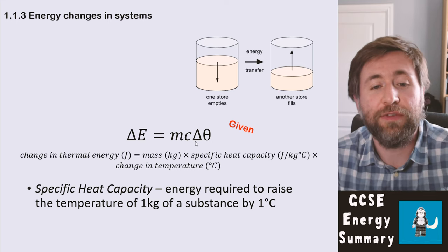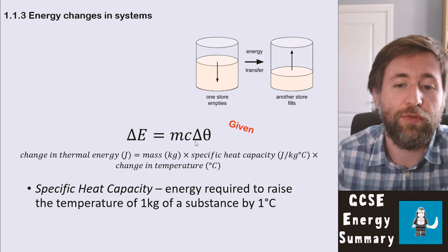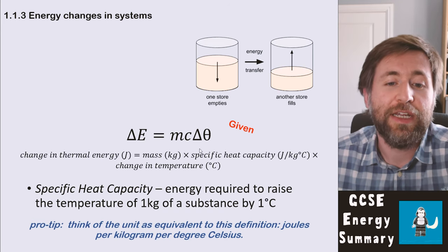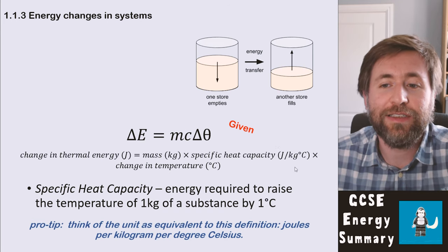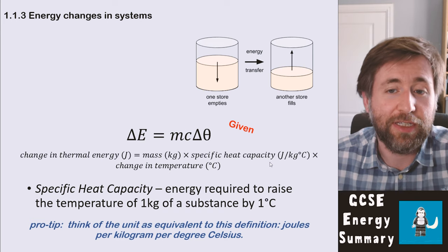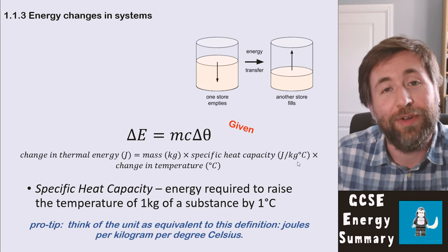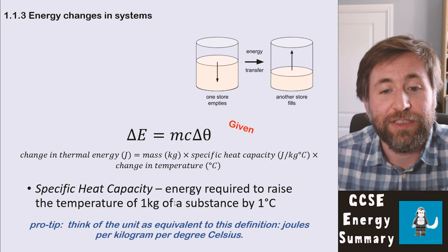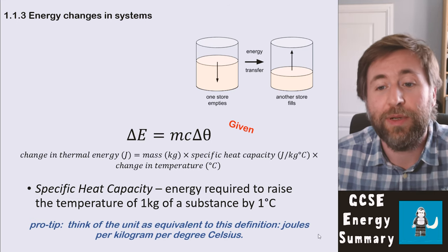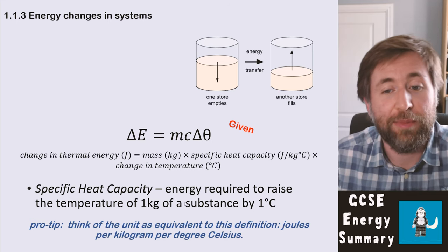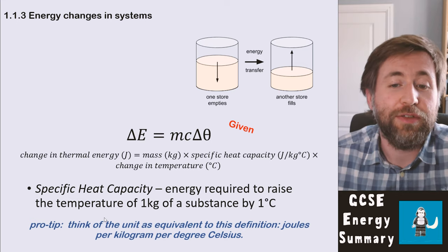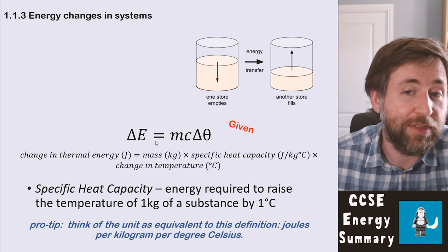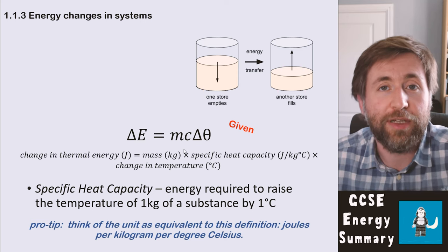Memorize the definition of specific heat capacity: it is the energy required to raise the temperature of one kilogram of a substance by one degree Celsius. Notice that this is exactly the same as the unit of specific heat capacity — joules per kilogram per degree Celsius — which is equivalent to energy per mass per temperature change. So think of the unit as being equivalent to the definition, or indeed a rearranged form of that equation.